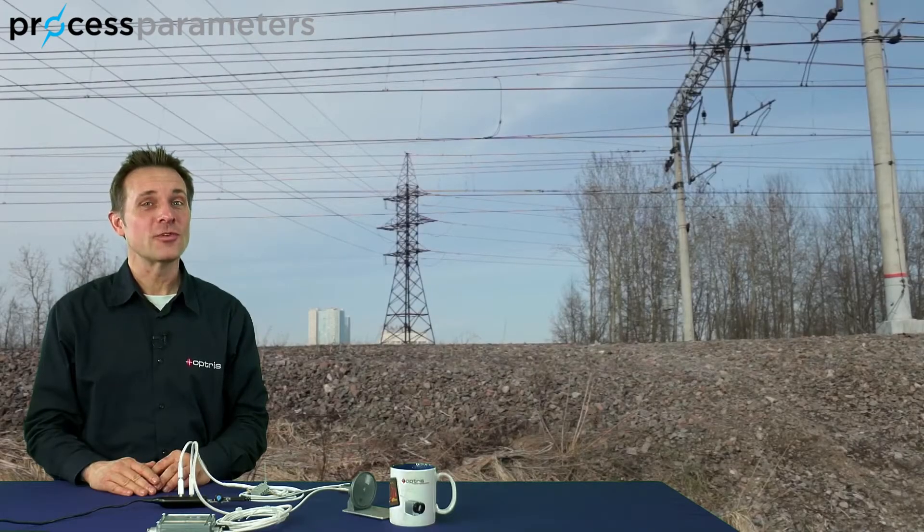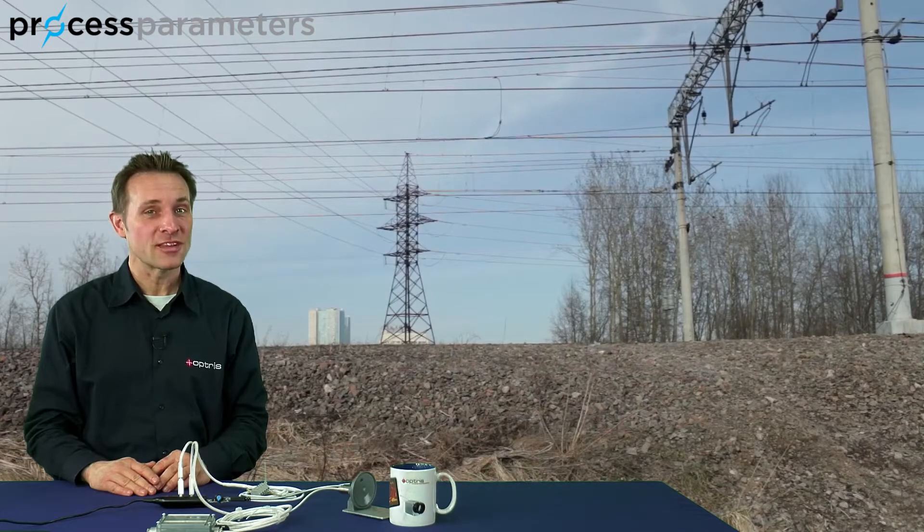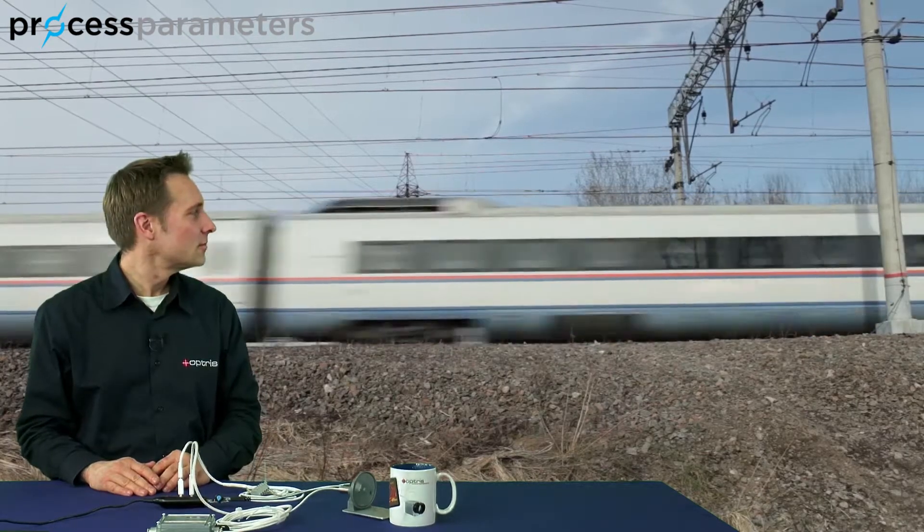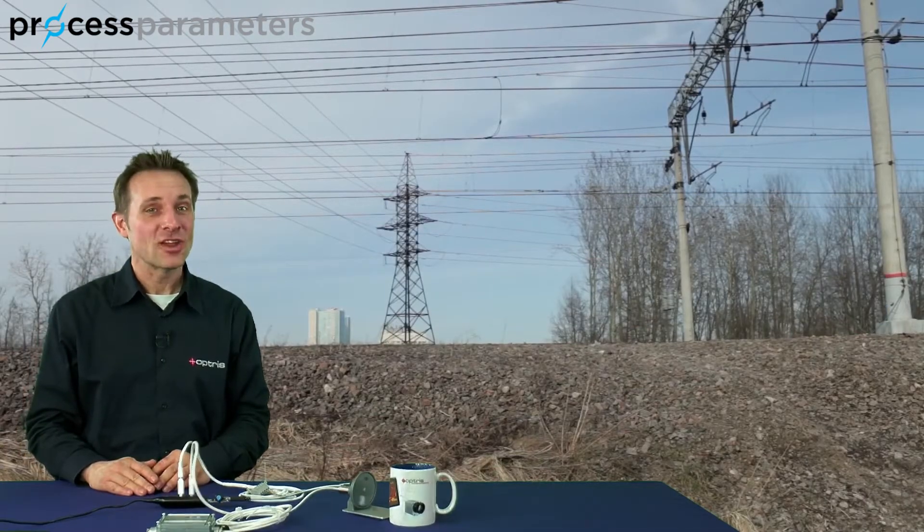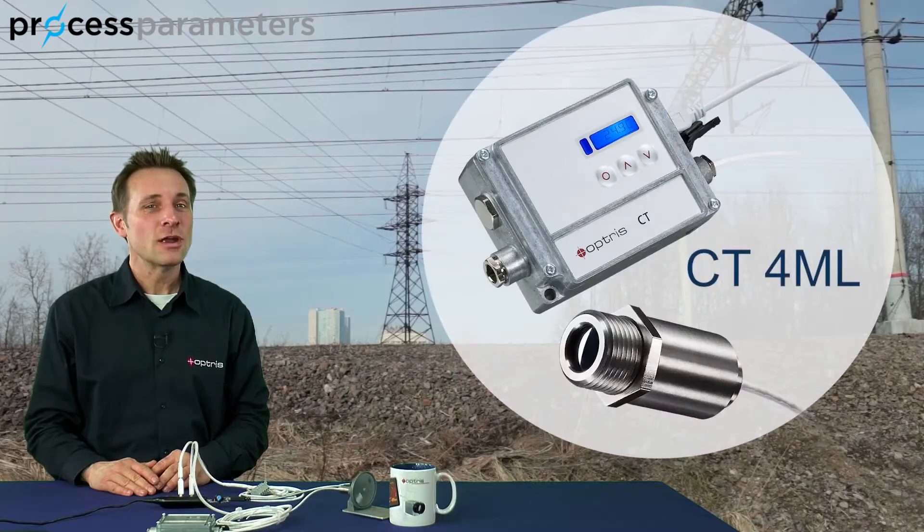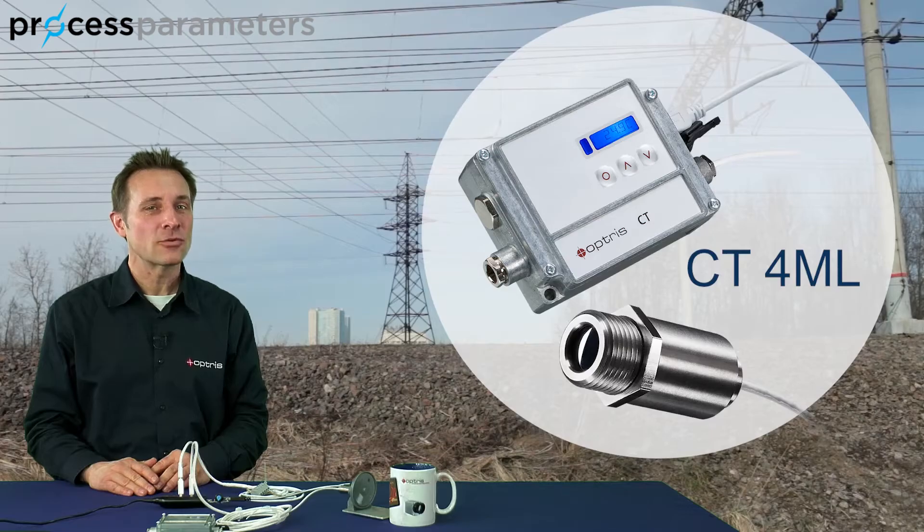Did you know that Optris has one of the fastest temperature sensors for very fast objects? With the new CT4ML sensor, it is possible to measure target temperatures with an ultra-fast exposure time of 90 microseconds.